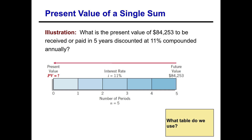This is obviously a present value question — we want to know what we need to invest today. If you look at the timeline, the question mark is on the present value spot. Now that we have our interest rate and our periods and know it's a present value question, we have to determine if it's a lump sum or an annuity. The question asks how much we'd invest today as a one-time payment, not multiple periodic payments, so this is a lump sum question.